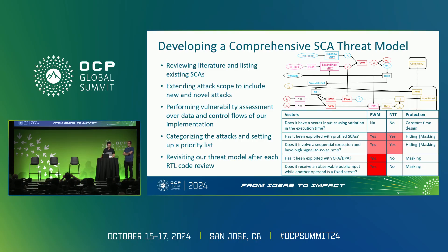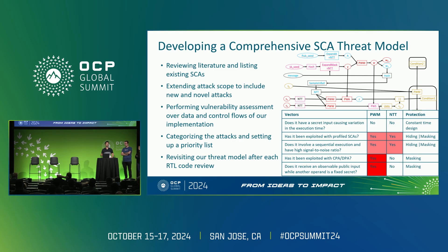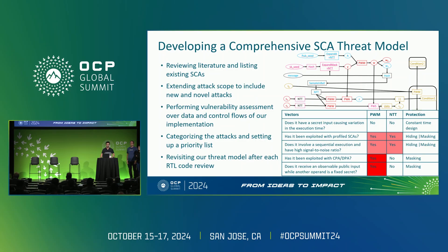Here is an example of how we create the threat model. We first review the literature, listing existing side channel attacks, and extend our scope by discovering new vulnerabilities. We perform a vulnerability assessment on the data flow and algorithm flow, then categorize operations based on a priority list, which we review as the RTL is updated. On the right side, you can see an example of the signing flow for MLDSA, with operations labeled blue or red. We examine operations like pointwise multiplication and NTT against attack vectors to determine whether they need a countermeasure, and what kind.